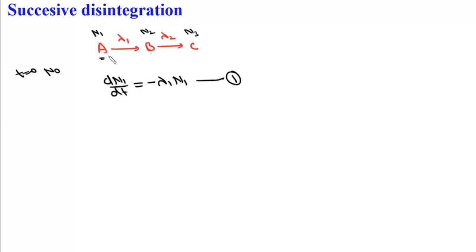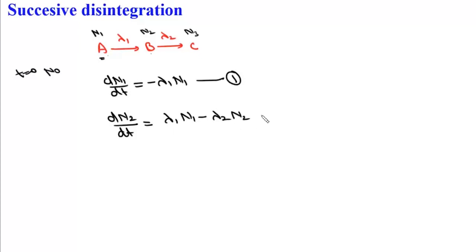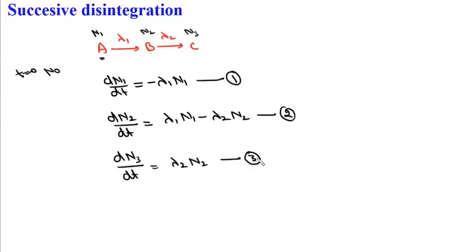B is produced from A and is decaying into C. So dN2/dT is given by the rate of formation λ1·N1 minus the rate of decay λ2·N2, and that is our second equation. C is formed from B, so dN3/dT equals simply λ2·N2, and that is our third equation.